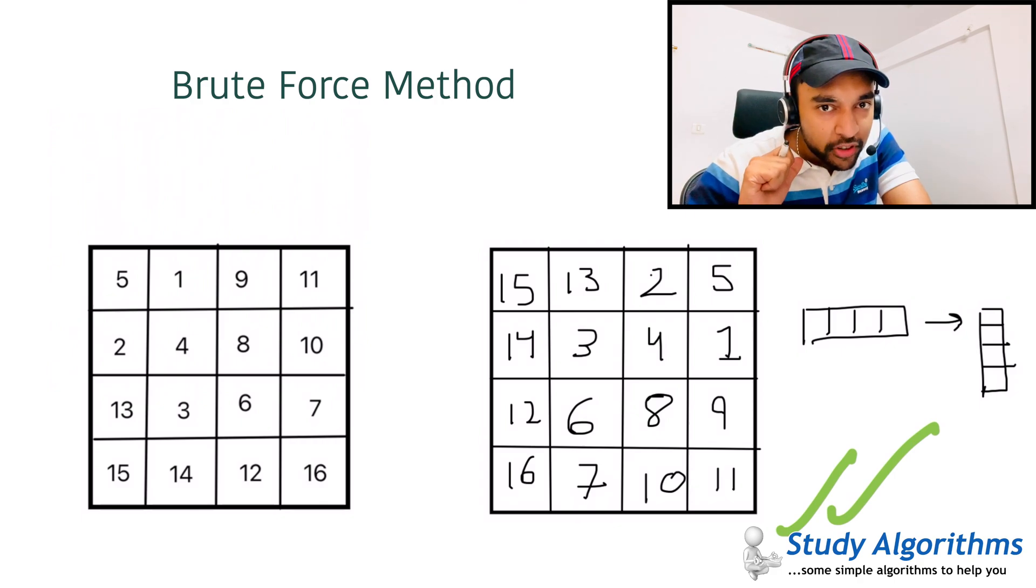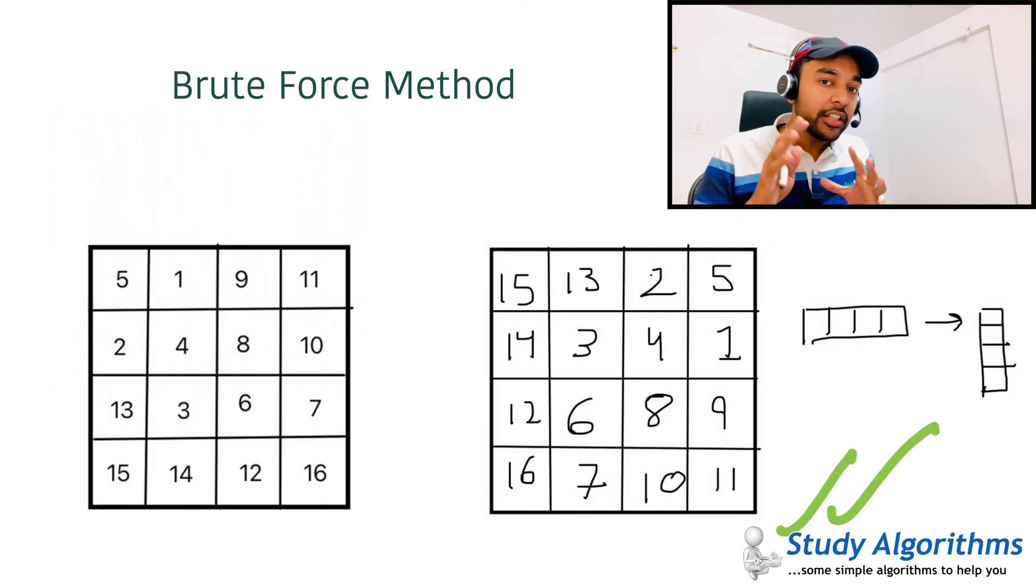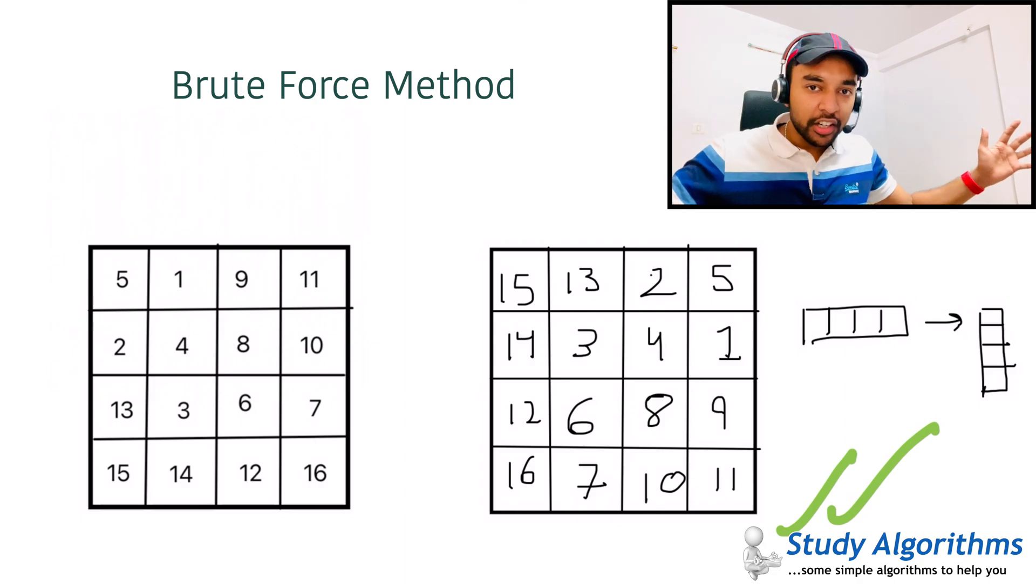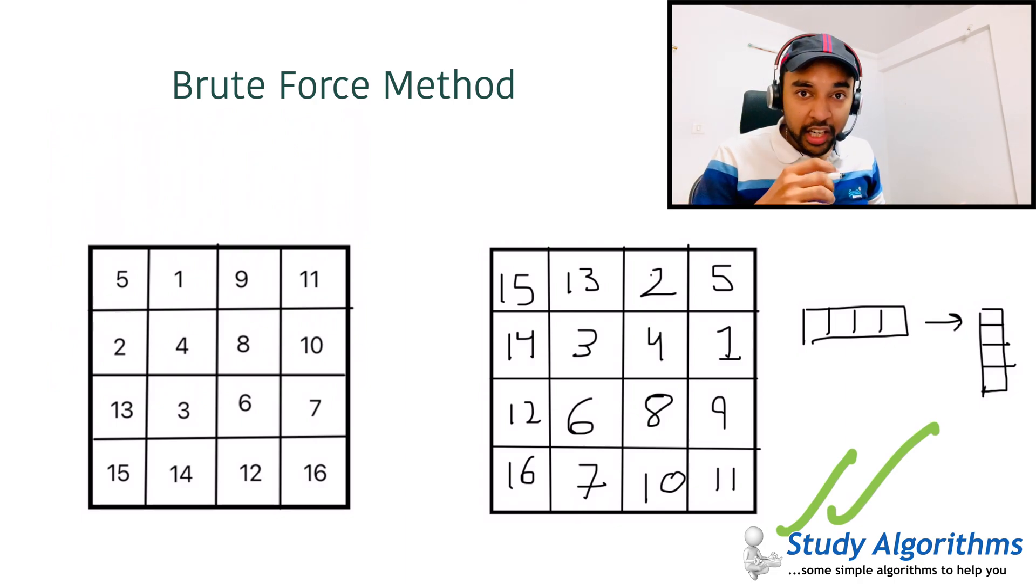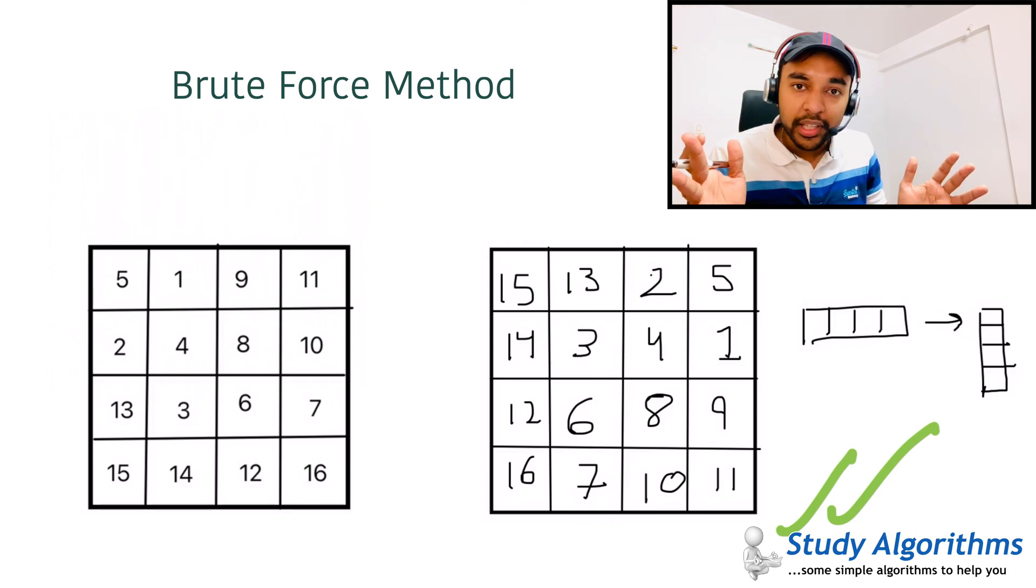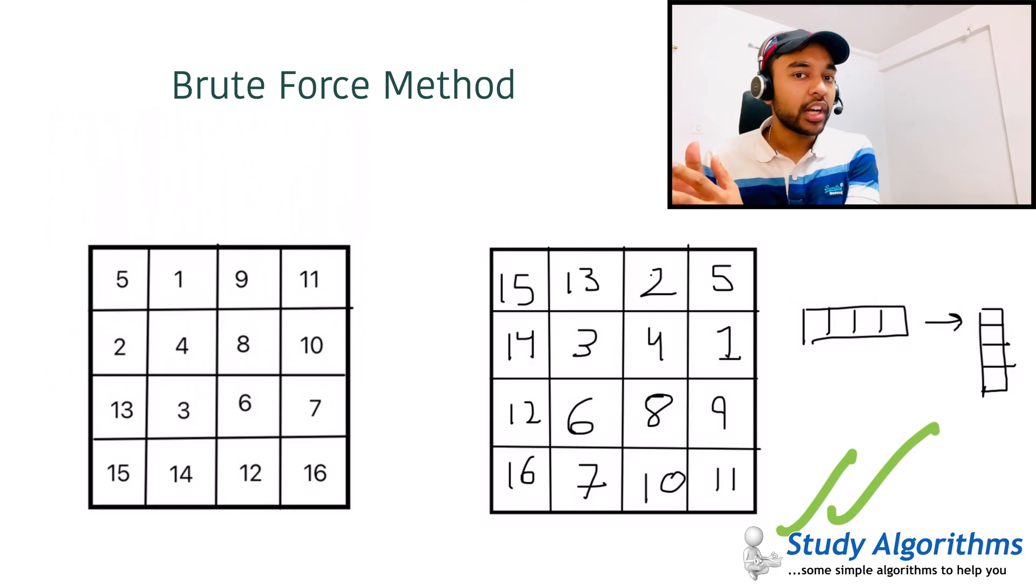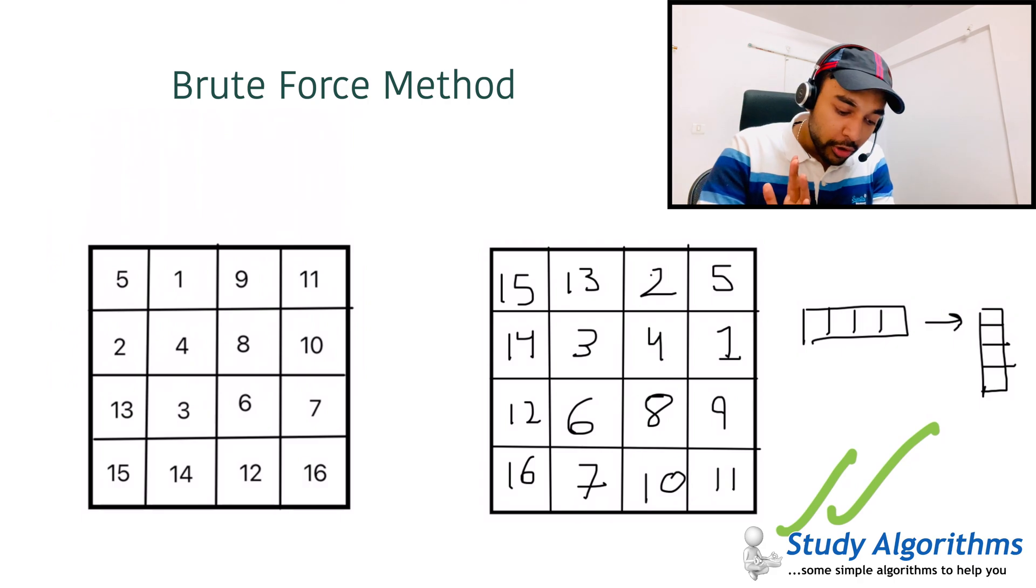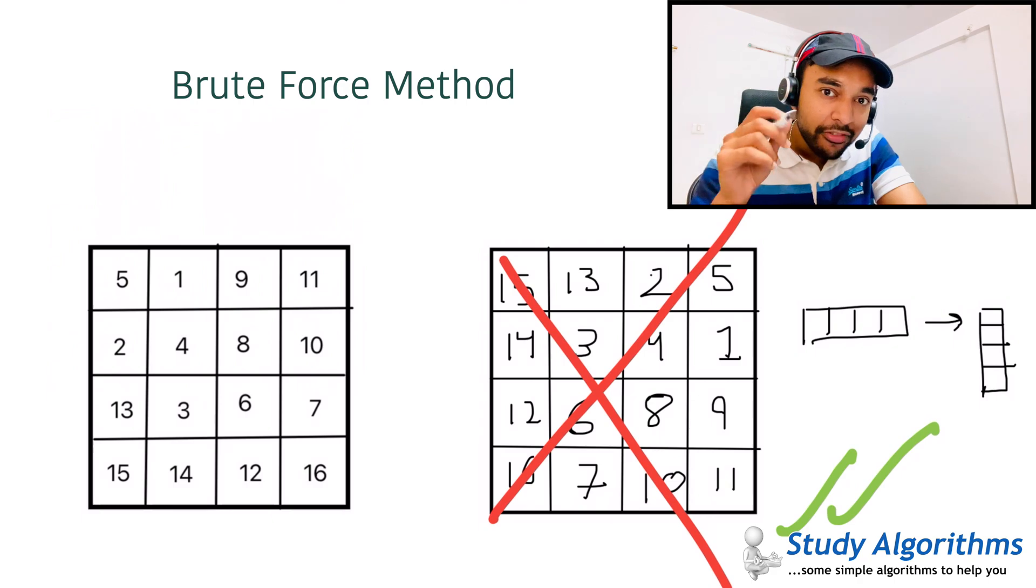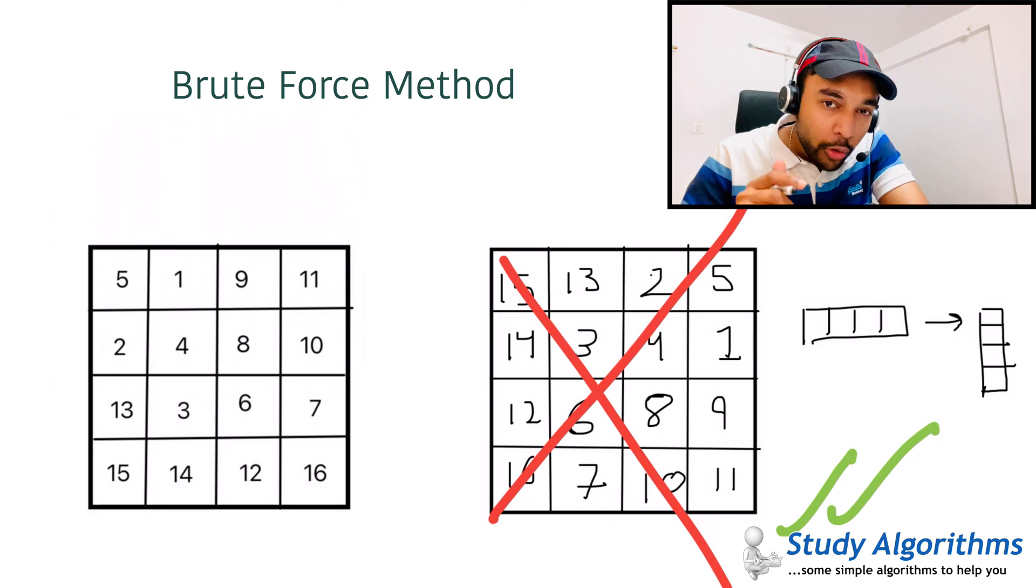But do you see the problem with this approach? You had to create a new matrix and you were storing all your results in this new matrix. Think about a case when your image is very large. Suppose you have a 10 MB image. Then, to rotate it, you need additional 10 MB of space on your drive. Similarly, in programming, if you have a matrix that is having 10,000 elements, then you need an additional space to store 10,000 elements. This method of rotation is not feasible as this is not space efficient. We need to find a very space efficient method.